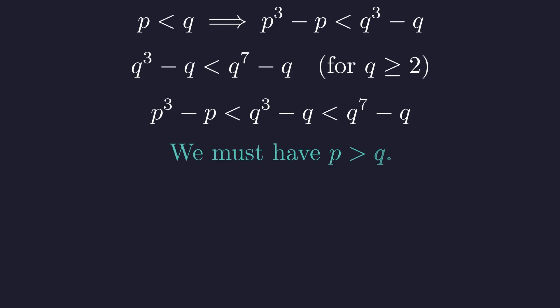We have now eliminated the possibilities of p equals q and p is less than q. The only remaining possibility is that p must be strictly greater than q. This is a critical constraint.